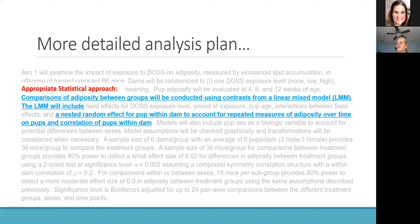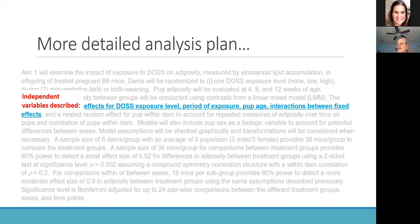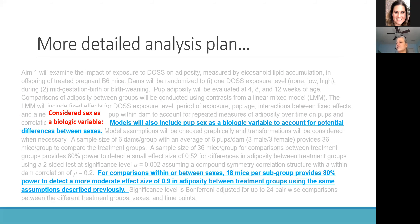They go on to describe the appropriate statistical approach: comparing adiposity between groups using a linear mixed model. The model includes a nested random effect for pup within dam to account for repeated measures of adiposity over time and correlation for pups within dams. They describe independent variables to be considered: DOS exposure, period of exposure, pup age, and the interaction between those effects. They point out they're going to include pup sex as a biologic variable to account for potential sex differences, and do an initial power calculation followed by one based on the smaller sample size comparing within and between sexes.